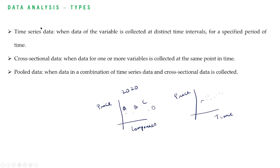A combination of these two is called pooled data. When the data is a combination of time series data and cross-sectional data and these are collected for doing analysis, then it is called pooled data.